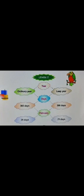Let's learn it through a web chart. We can divide a year into an ordinary year or a leap year. The number of days in an ordinary year is 365, but in a leap year there are 366 days. In an ordinary year, February has 28 days, but in a leap year, February has 29 days.